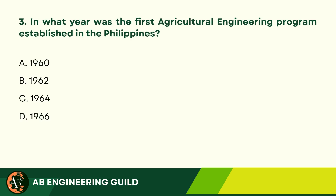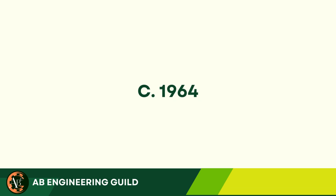Question 3: In what year was the first agricultural engineering program established in the Philippines? A. 1960. B. 1962. C. 1964. D. 1966. Answer: C. 1964.